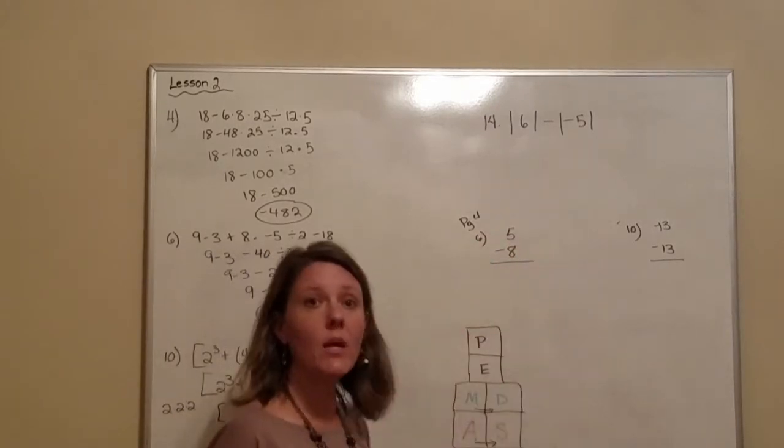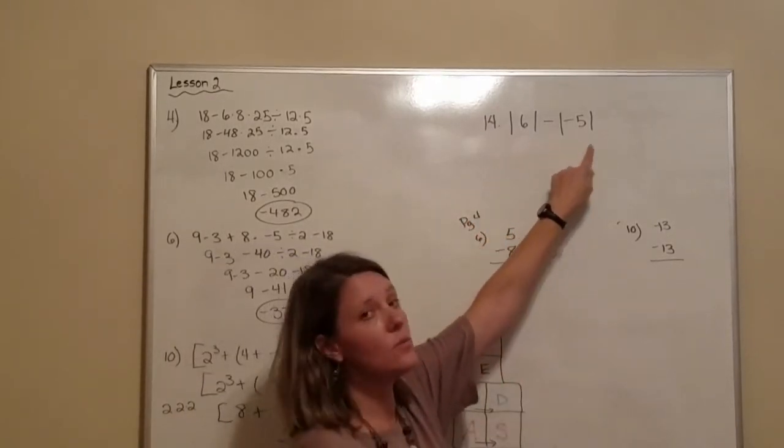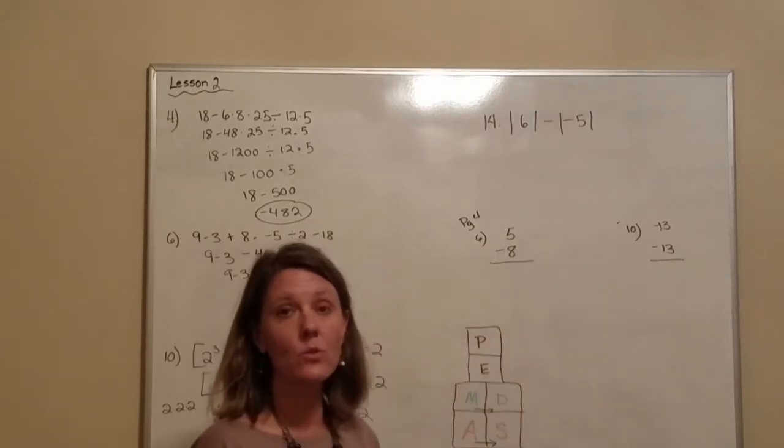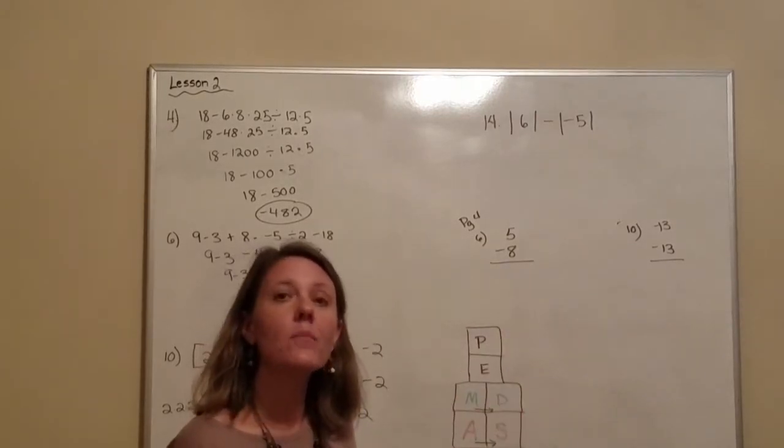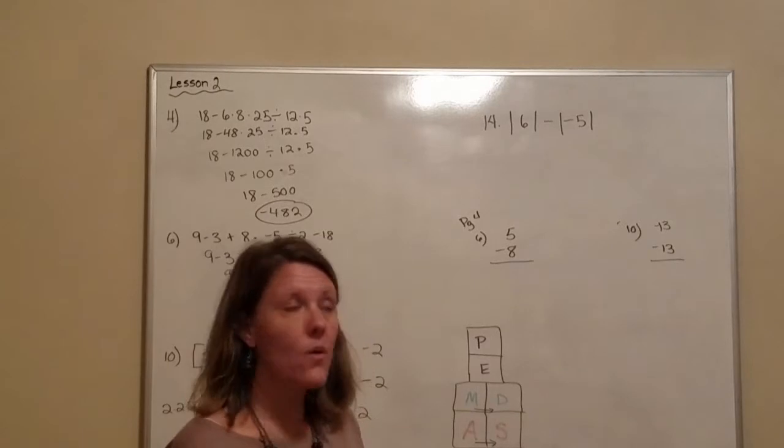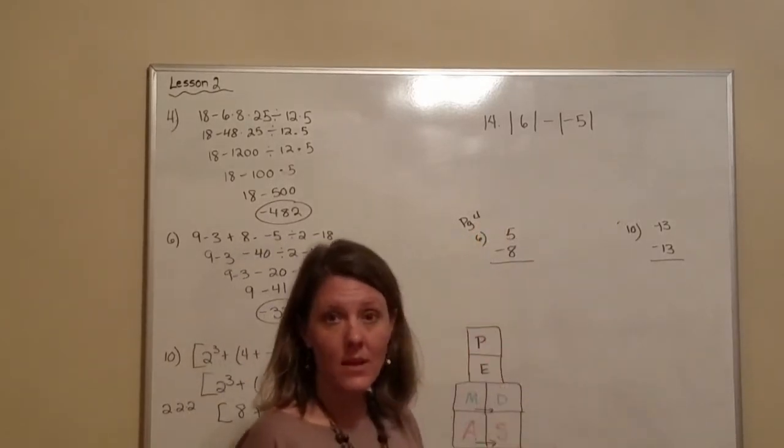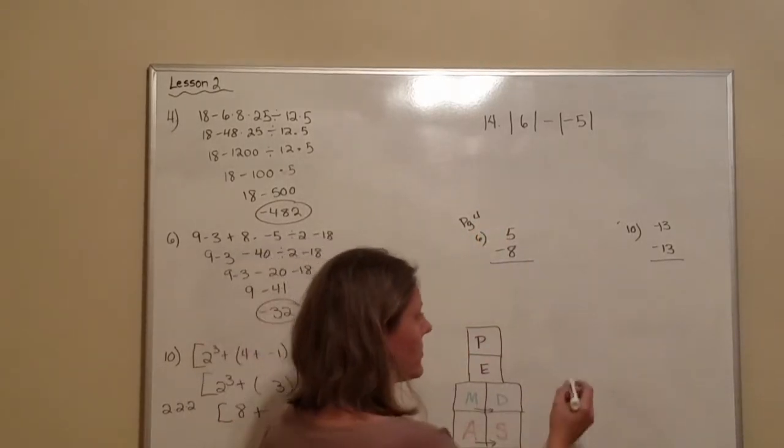This one up here has these signs. These little symbols right here. And that is absolute value. And the absolute value means the distance from zero. So, how many units is 6 away from zero?